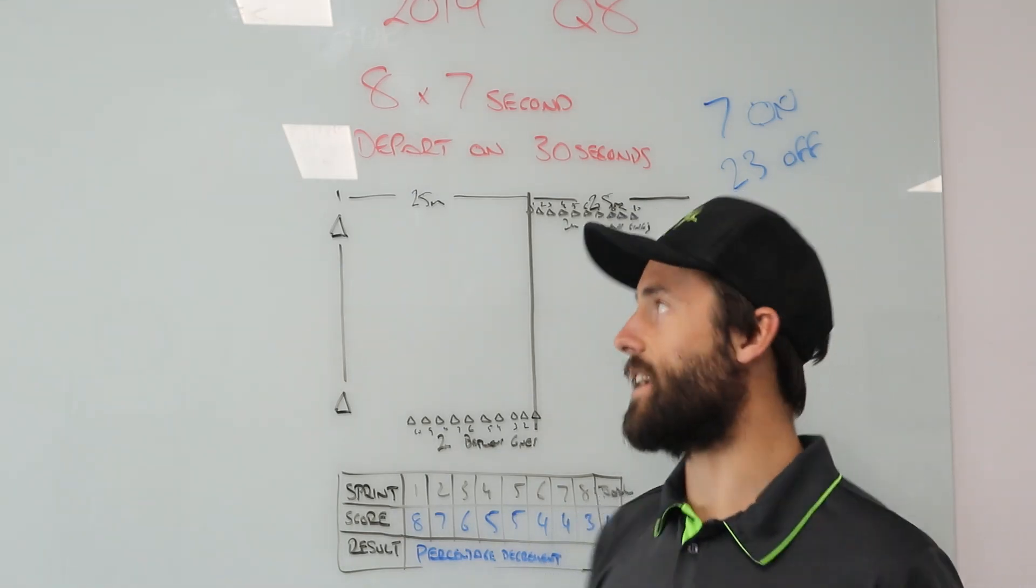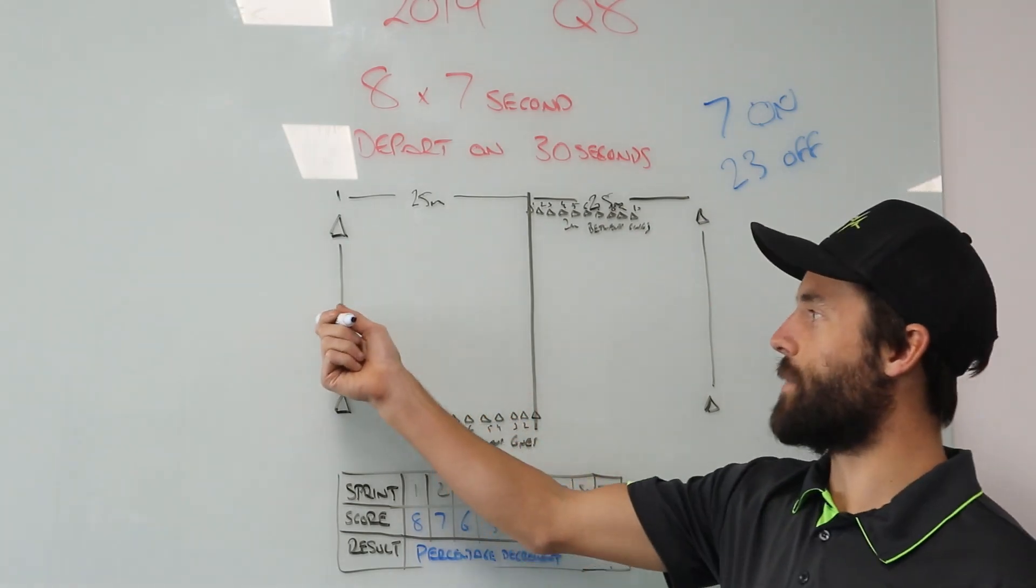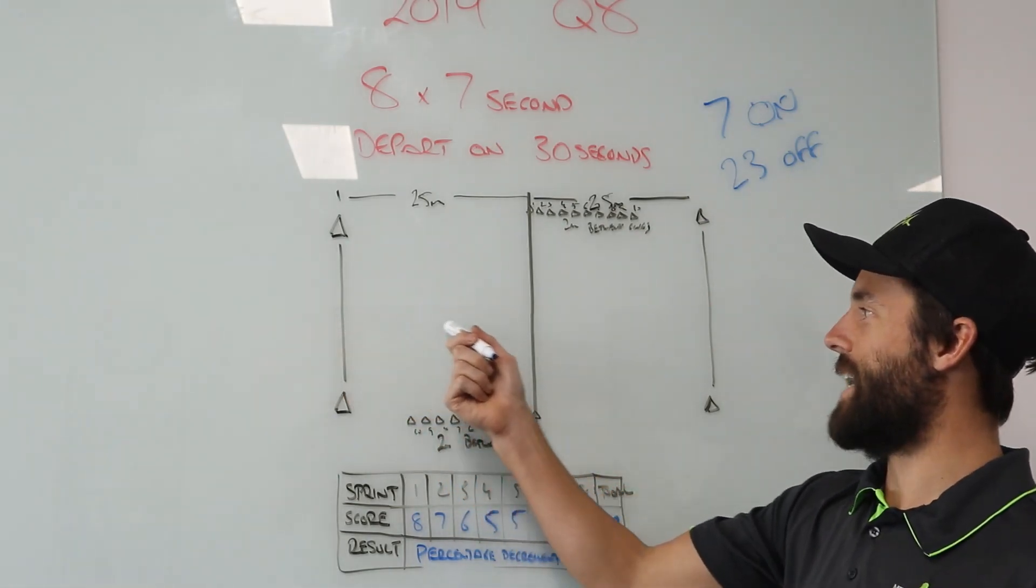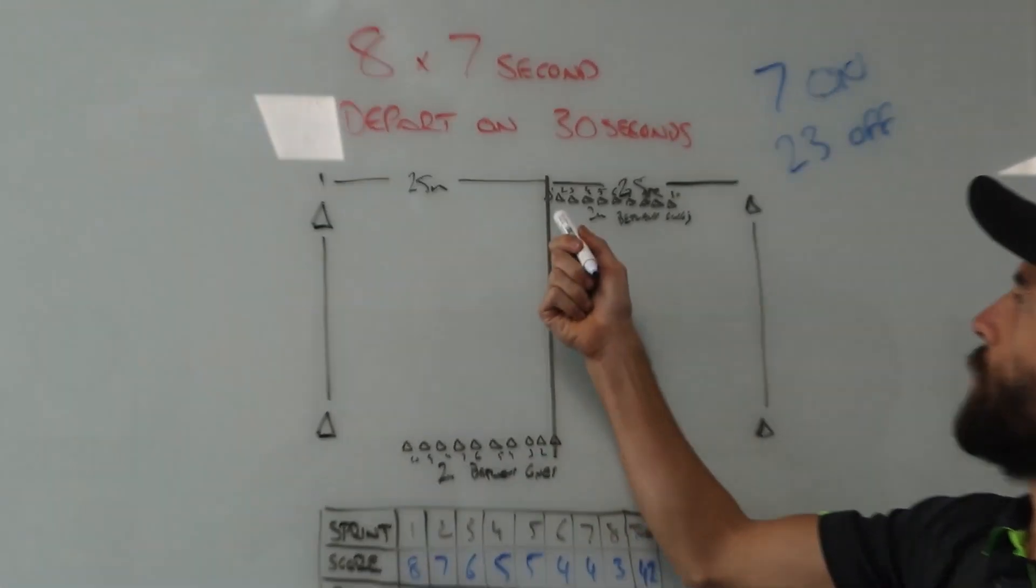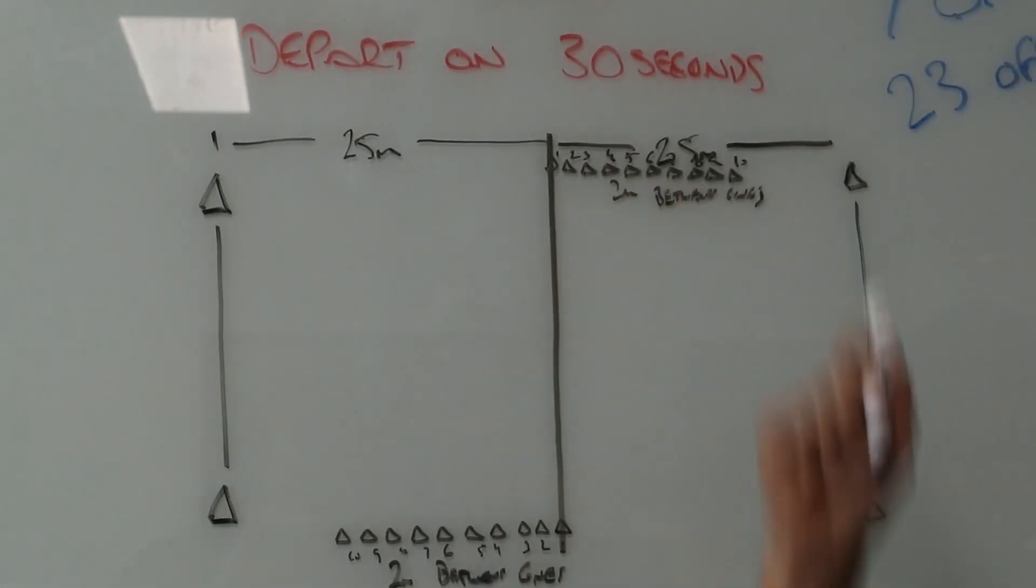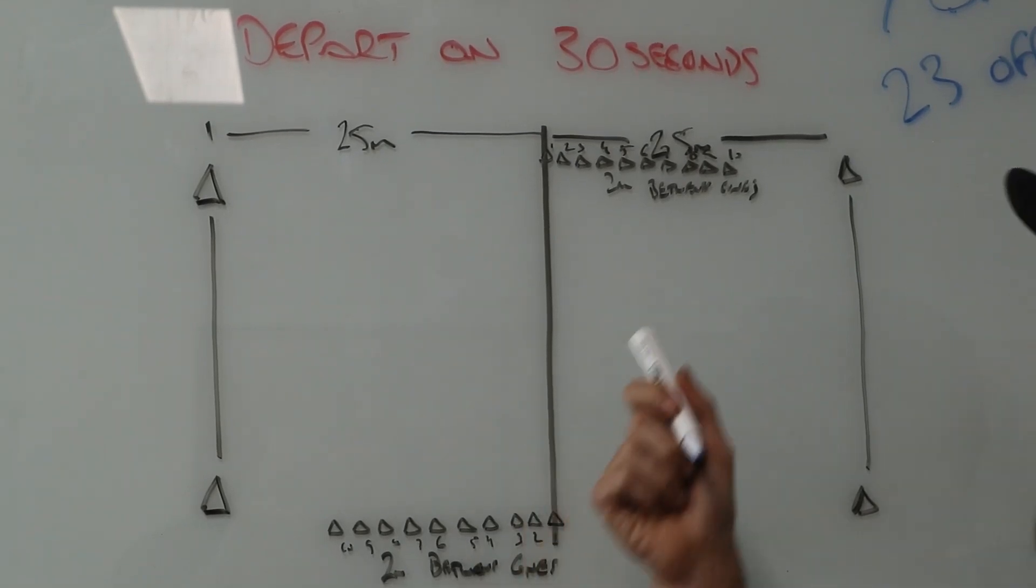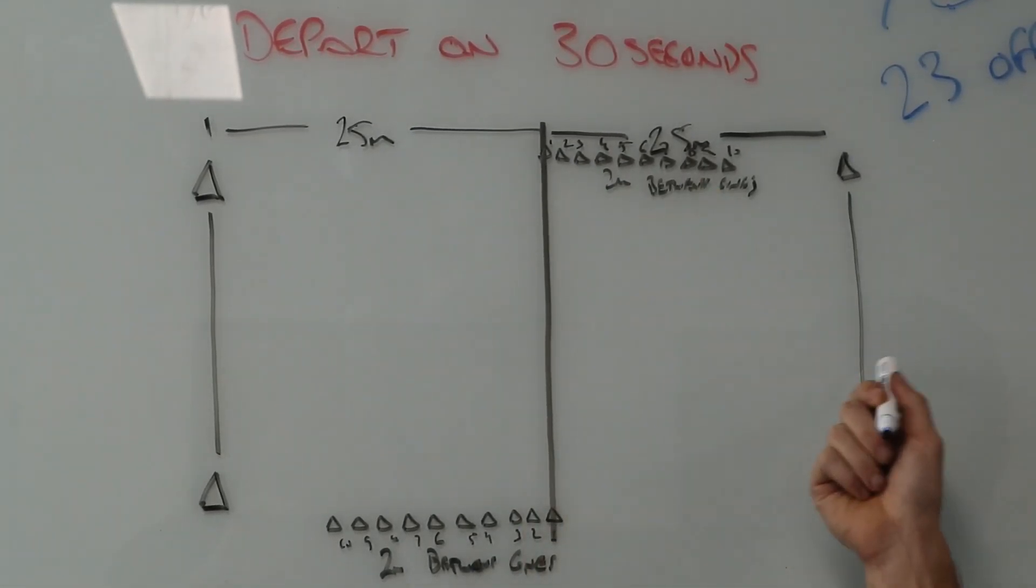The athletes start from here, they sprint, seven seconds gets called, and we're counting how many of these 10 cones we get past. That's how the test works.